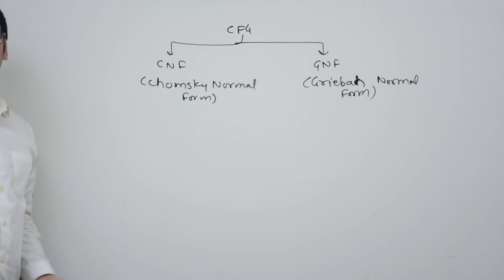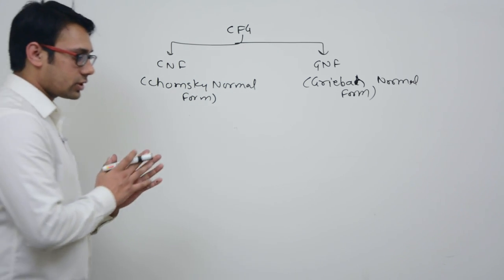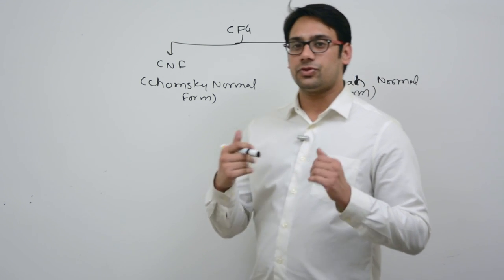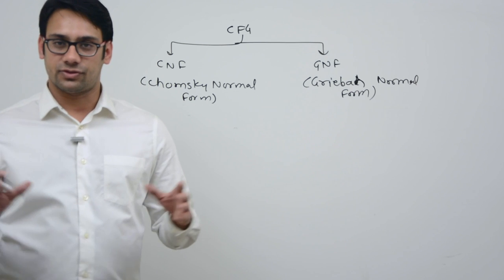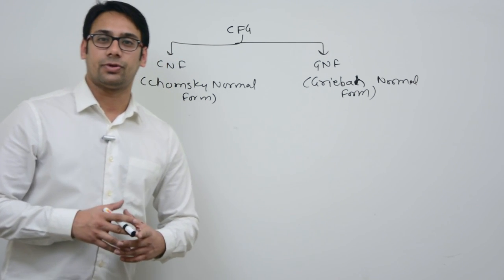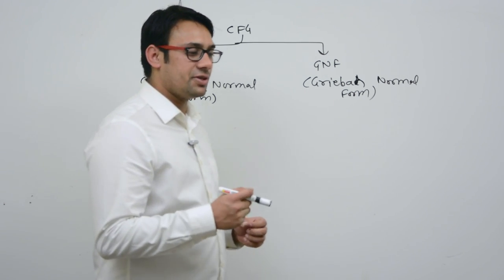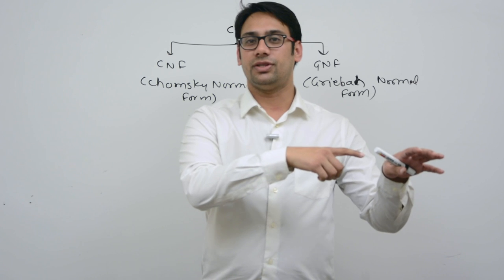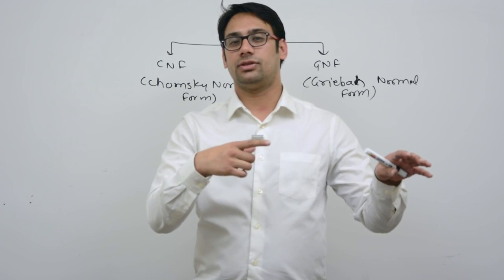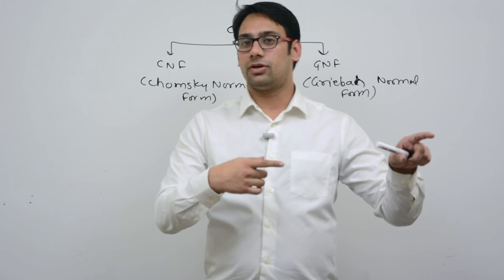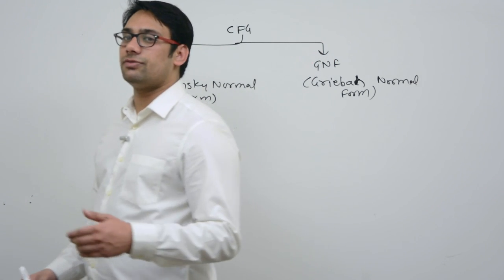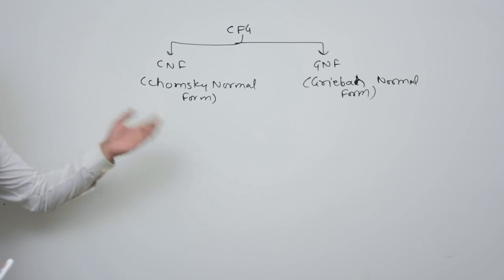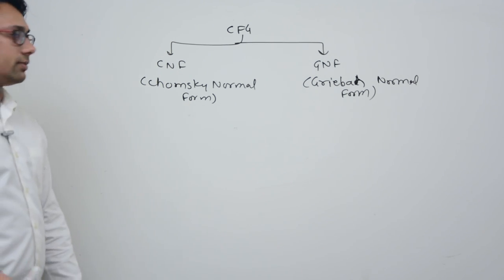Chomsky normal form is used to represent context-free grammar. The main advantage of Chomsky normal form is that if you want to derive any string of a particular length, there is only a fixed number of steps you will take to derive the string. This is used for identifying the membership problem in case of context-free grammar. The membership problem is: given any random string and any grammar, can I generate this string from this grammar? That is, is this string a member of the language represented by this grammar? So CNF is used to identify whether a given string is a member of a particular language represented by a grammar — this is called the membership problem.